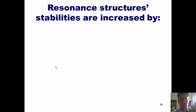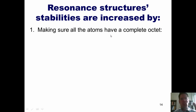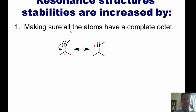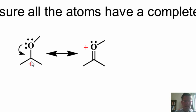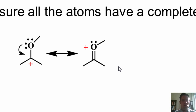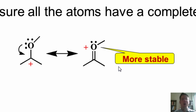The answer is this. Resonance structure stabilities are increased by the following rules. Rule one: making sure that all atoms have a complete octet. Here's an example of a resonance structure. The one on the left and the one on the right both have a positive charge. However, in the one on the left, the carbon here only has six electrons around it, whereas the one on the right has all eight. The oxygen has eight electrons around it in both examples. The most stable resonance contributor is the one on the right, because all atoms in it have full octets. Thus, in reality, this molecule will look more like the resonance contributor at right.